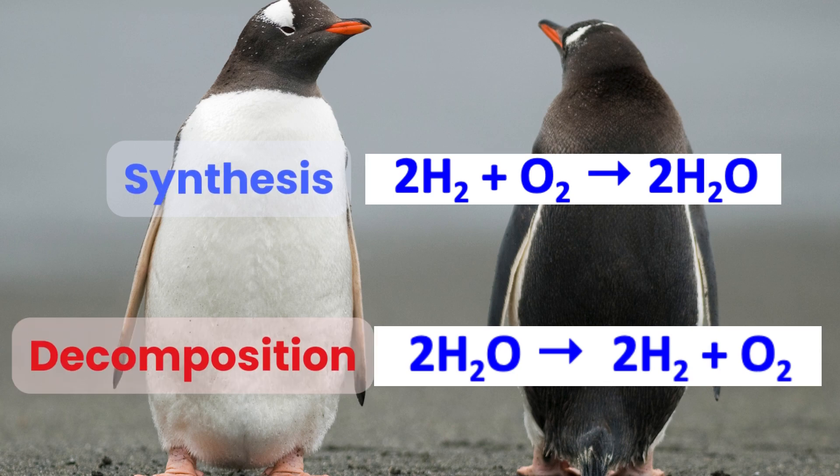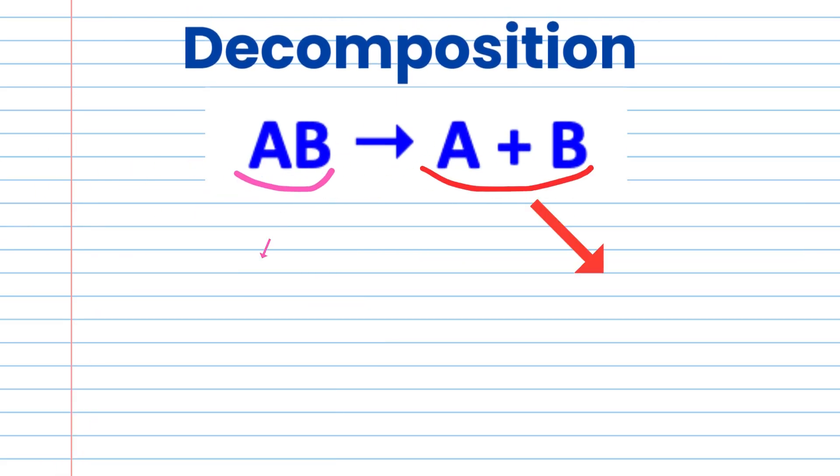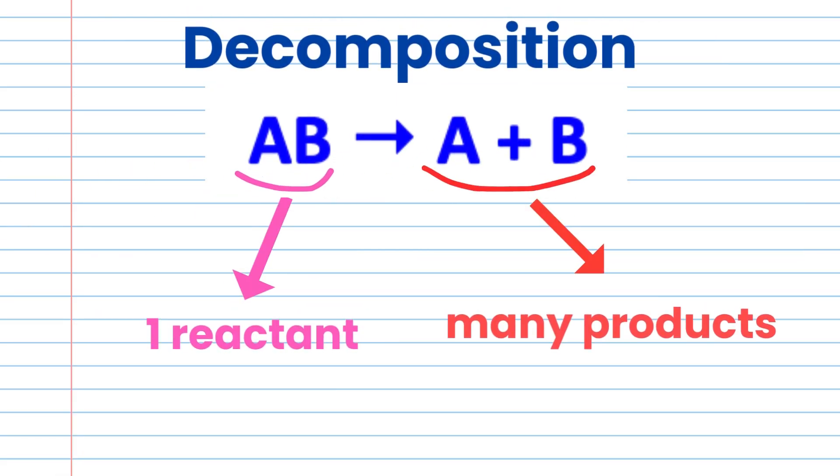So decomposition is the exact opposite of synthesis. Decomposition can be represented as AB gives A plus B. In a decomposition reaction, there is only one reactant, but you can have many products.